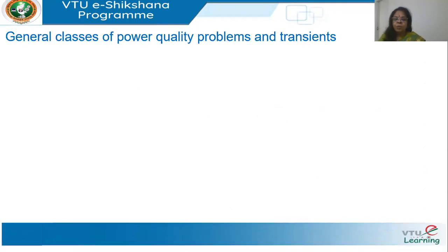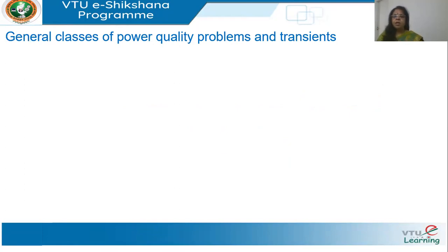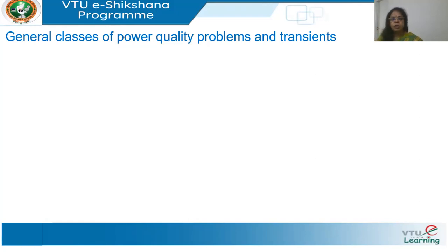First we will see what are the general classes of power quality problems and transients. When I say a class, I mean how do I group them. There are many problems, and each affects a different parameter — some may affect the magnitude, some the wave shape, and some a combination. There are some broad classifications, and in this lecture we will see how power quality problems are classified.